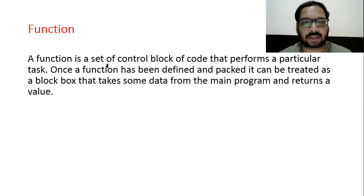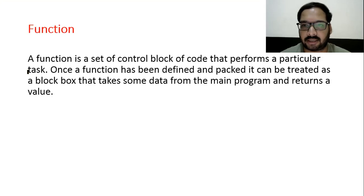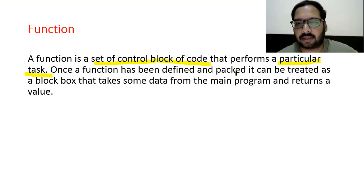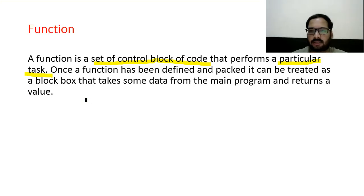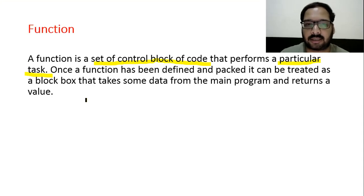Function is a set of a control block of code that performs a particular task. In the functions video, I explained that besides main, we can create other functions called user-defined functions, and some predefined functions can be used directly. A function performs one task at a time. Once defined, it can be treated as a black box that takes some data from the main program and returns a value — it receives input, performs calculation, and provides a result.